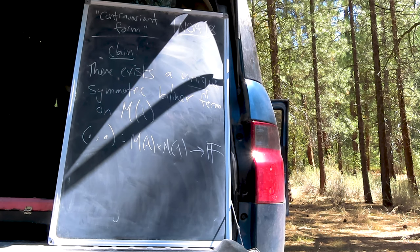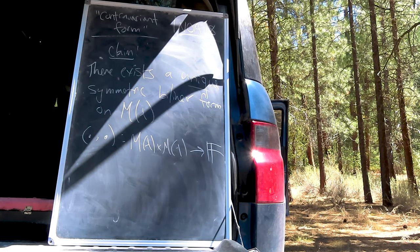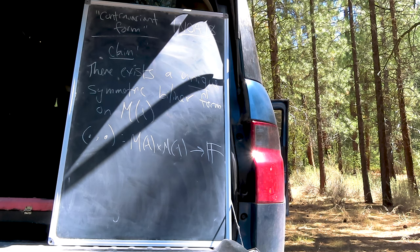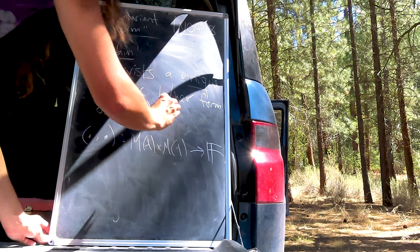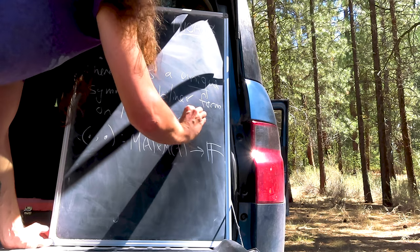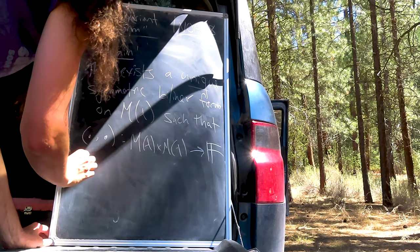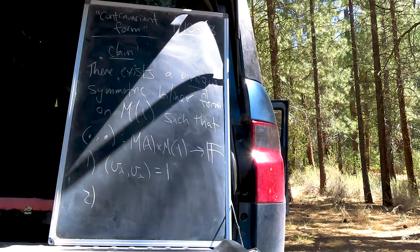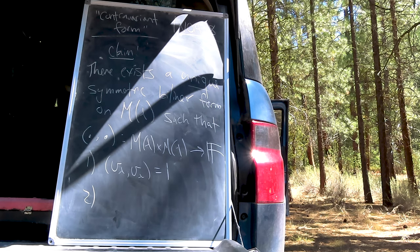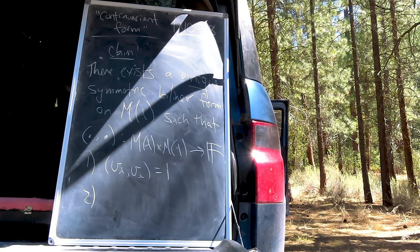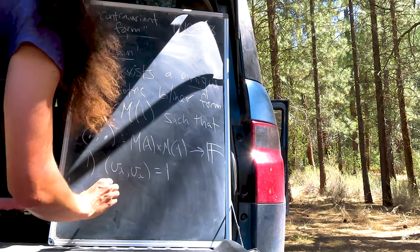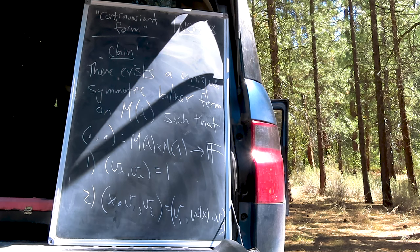We now turn our attention to the main idea of today, which we frame as a proposition. Following FLM, we claim that there exists a unique symmetric bilinear form on M of Lambda that satisfies two conditions. First, the bilinear form is normalized so that V Lambda with V Lambda is unity. And the second involves the anti-involution Omega.